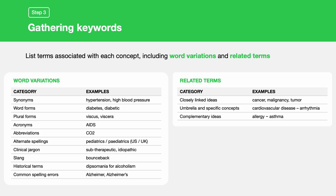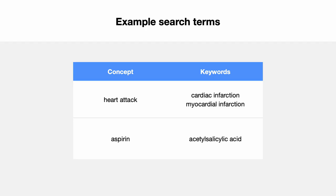To expand your list, consider related terms. For example, think about closely linked ideas like cancer, malignancy, and tumor. Explore umbrella concepts and their specific aspects, along with complementary ideas like the connection between allergy and asthma. Background resources like UpToDate, textbooks, or Wikipedia can help you uncover more relevant terms. For our search on heart attack and aspirin, use keywords like cardiac infarction and myocardial infarction for heart attack, and include aspirin's chemical name as a keyword.